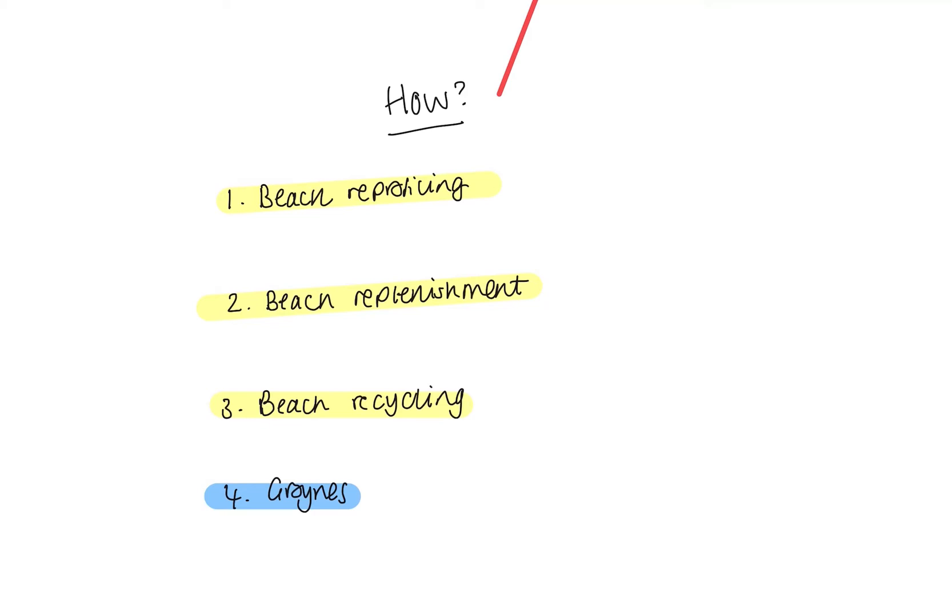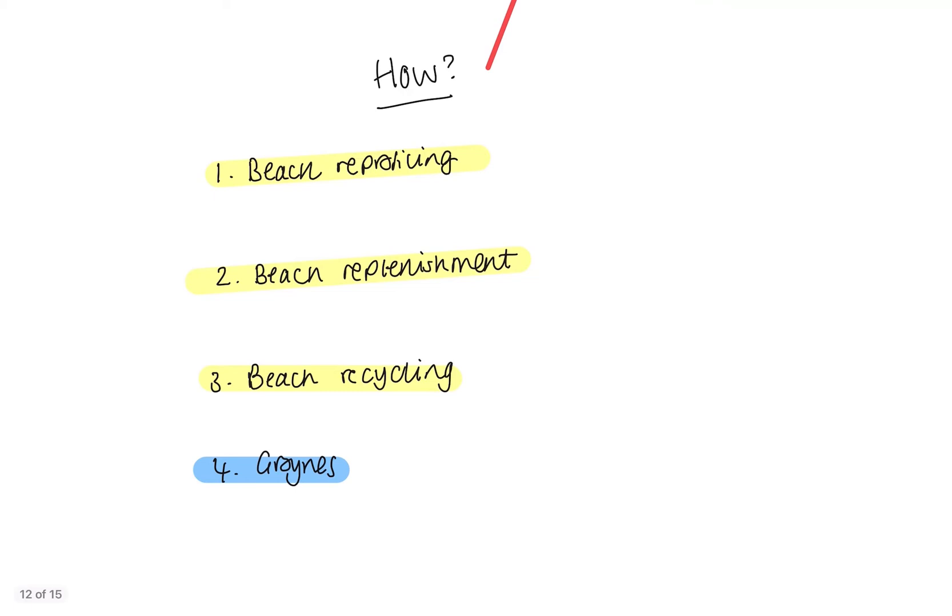With beach replenishment, we've already spoken about the threat that longshore drift poses to the area. This means that material is constantly being lost. So this material, as part of beach replenishment, is replaced when it's dredged from the seabed and sprayed back onto the beach.